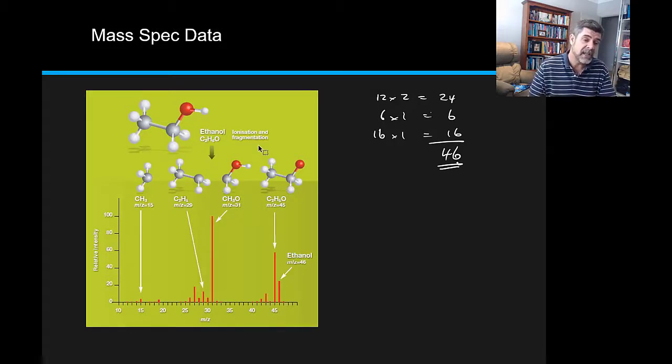Now you can, interestingly enough, see a peak at 45. Now 45 has only lost a mass of one and a mass of one is a hydrogen. So you can see the first of the little molecules that we have on the side here is a molecule that is basically ethanol without that hydrogen attached to the oxygen. So 46 minus 1 is 45, so that means it must have lost a hydrogen that fragmented off it.